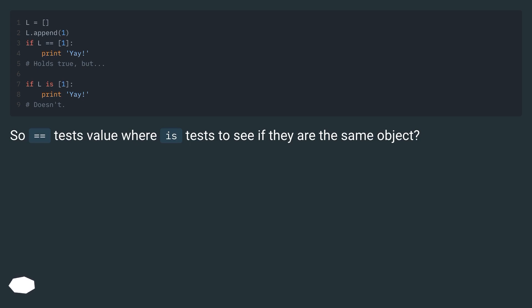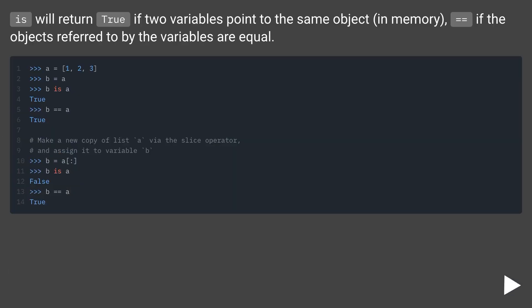So equals equals test value where is test to see if they are the same object. Is will return true if two variables point to the same object in memory, equals equals if the objects referred to by the variables are equal.